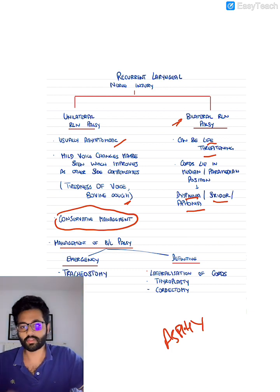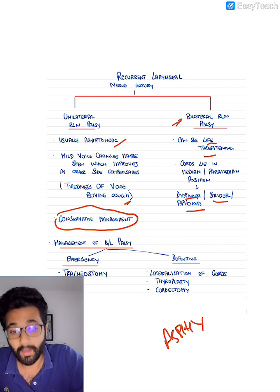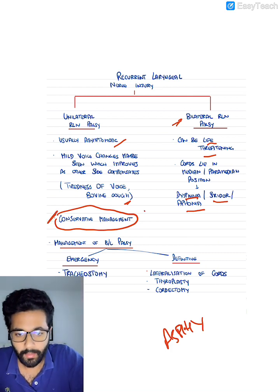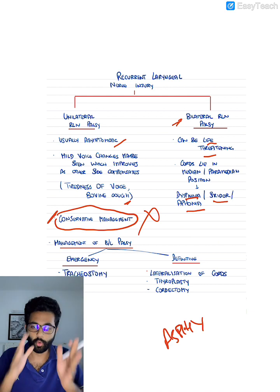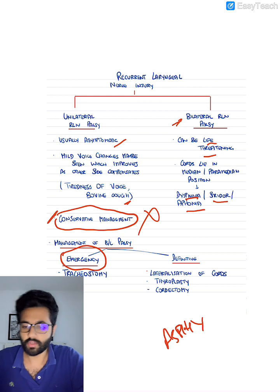So how do you manage it? As we said, if there's a unilateral injury, it's usually conservatively managed. But a bilateral injury cannot be conservatively managed. So there's two broad ways of managing. Firstly, a bilateral injury requires an emergency tracheostomy.